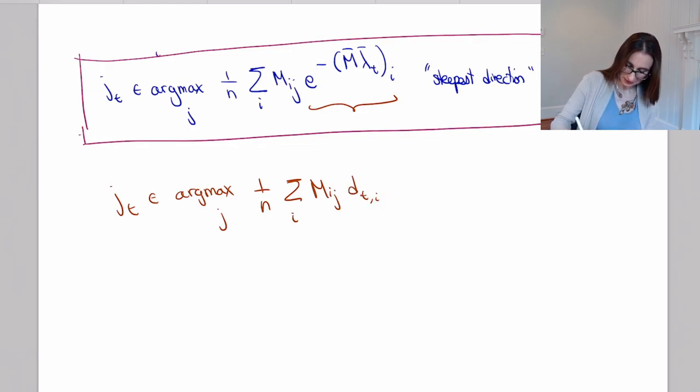If I just normalize the weight vector by dividing by the normalization constant, then I get d_t,i. This normalization factor doesn't affect which one is the maximizer because you're just multiplying all of them by the same positive constant, and that's also a reason that I can get rid of that 1 over n there.